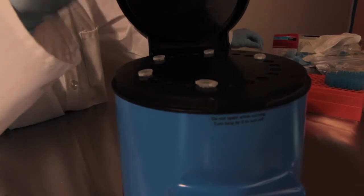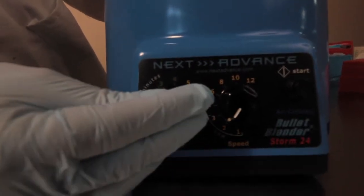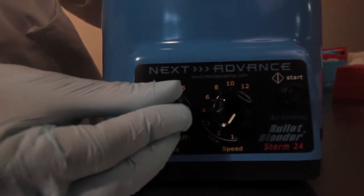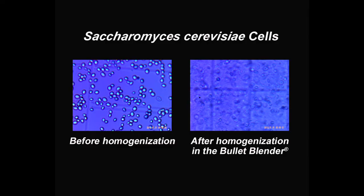Examine your samples. If homogenization appears to be incomplete, or if your results show that cell lysis is unsatisfactory, place them back in the Bullet Blender and homogenize for another minute or two at speed 10. Now, it's time to proceed with your downstream application.